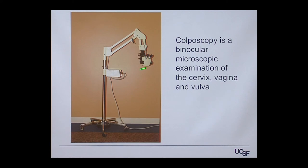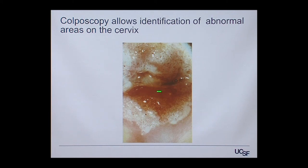Colposcopy uses a binocular microscope. We visualize the cervix through the speculum under bright illumination and apply a wash solution to the cervix, looking for areas that change from normal pink to white. Here's an example showing thick white epithelium after the wash, suggesting a precancerous lesion. We can take biopsies and send them to the lab to determine what's going on.